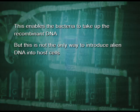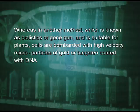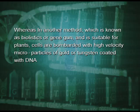This is not the only way to introduce alien DNA into host cells. Microinjection is a method in which recombinant DNA is directly injected into the nucleus of an animal cell. In another method known as biolistics or gene gun, which is suitable for plants, cells are bombarded with high-velocity microparticles of gold or tungsten coated with DNA.